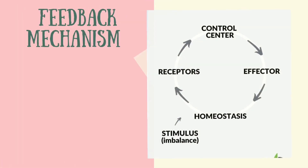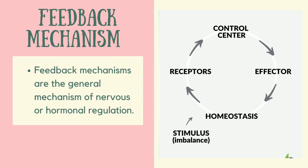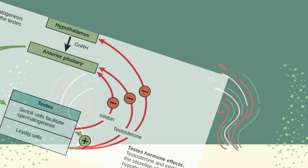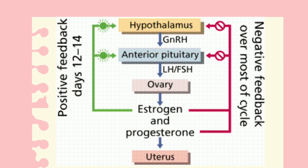Now, let us discuss feedback mechanisms. Feedback mechanisms are the general mechanisms of nervous or hormonal regulation. Here is an example of positive and negative feedback in our reproductive system. In the menstrual cycle, positive feedback occurs during days 12 to 14, while negative feedback occurs over most of the cycle.